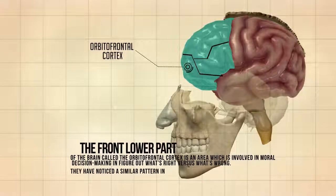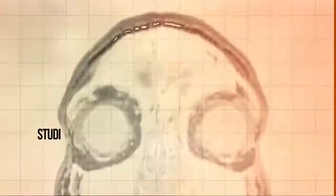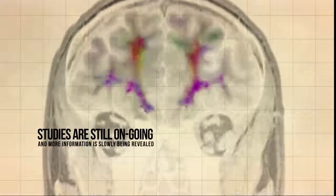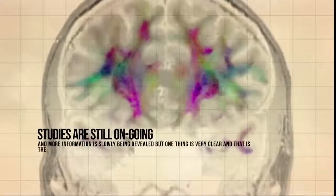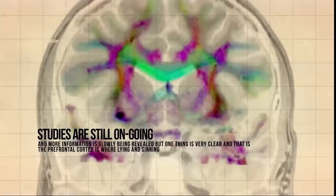They have noticed a similar pattern in the brain scans of criminals in this region. Studies are still ongoing and more information is slowly being revealed. But one thing is very clear, and that is the prefrontal cortex is where lying and sinning takes place.